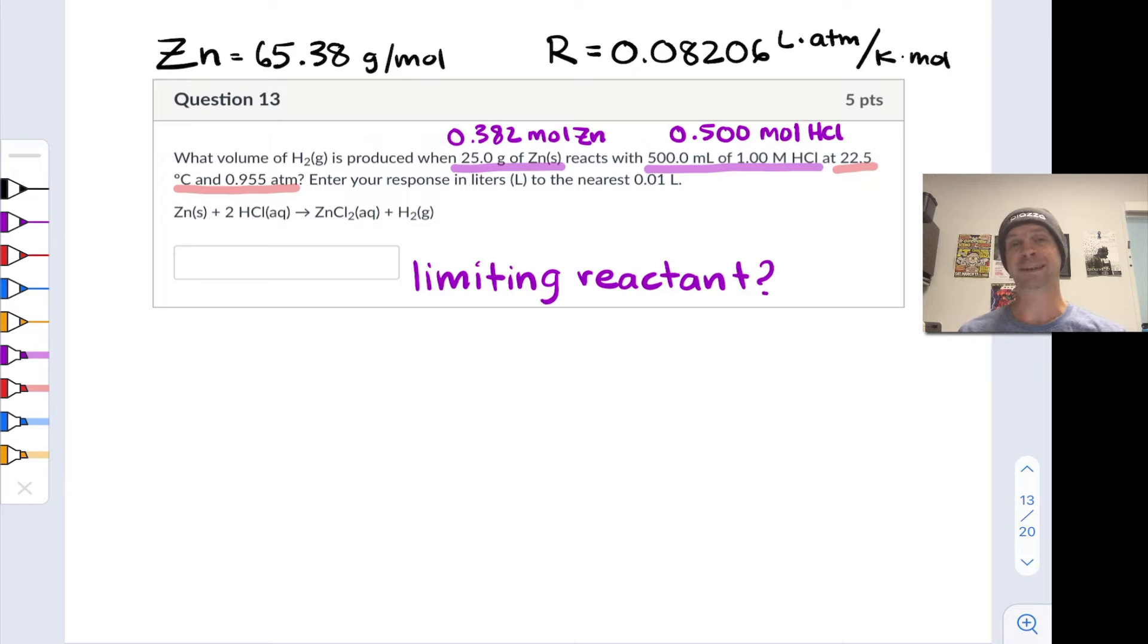For the HCl, we take the 0.5 liters or 500 milliliters of solution used and multiply by the molarity, one mole per liter, to get 0.5 moles of HCl. Now, this may lead you to believe that zinc is the limiting reactant because it's present in smaller quantity. But be careful. Two moles of HCl are used up for every one mole of H2 produced. So in fact, we can make less H2 from the HCl than we can from the zinc.